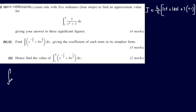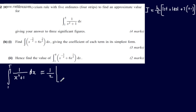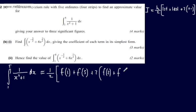So the integral from 1 to 5 of 1 over x squared plus 1 with respect to x will be approximately equal to 1 over 2 — taking h as the strip width of 1 — multiplied by f(1) plus f(5), plus 2 lots of f(2) plus f(3) plus f(4).